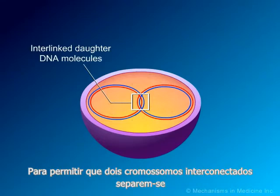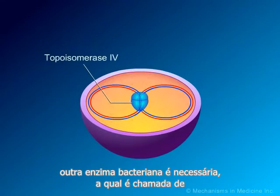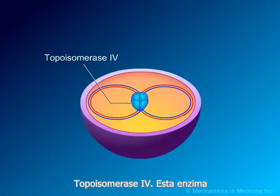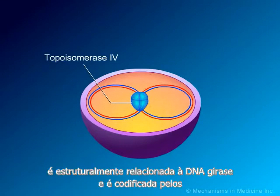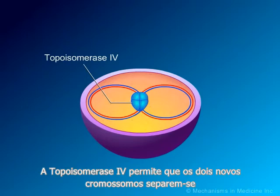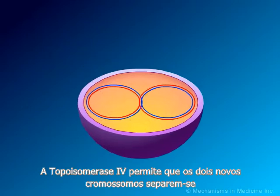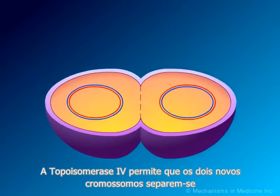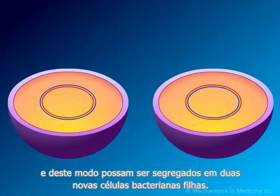In order to allow the two new interlinked chromosomes to come apart, another bacterial enzyme is needed, which is known as topoisomerase 4. This enzyme is structurally related to DNA gyrase and is coded for by the PARC and PARE genes. Topoisomerase 4 allows for the two new interlinked chromosomes to separate, so that they can be segregated into two new daughter bacterial cells.